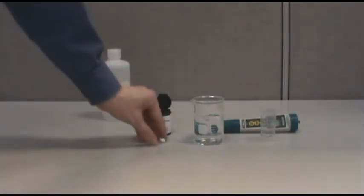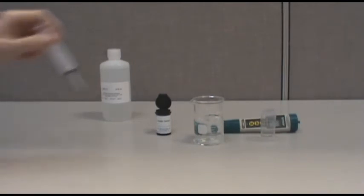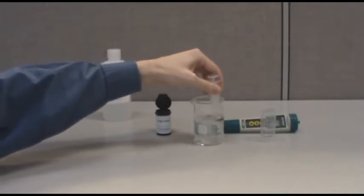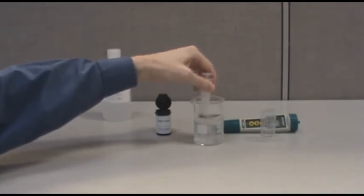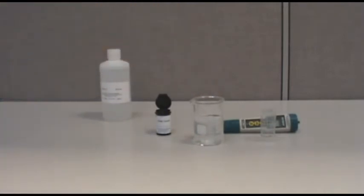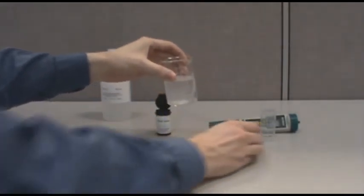To calibrate the meter, first dissolve a reagent tablet in your 1 part per million standard. Pour 15 to 20 milliliters of the prepared solution into the sample cup.